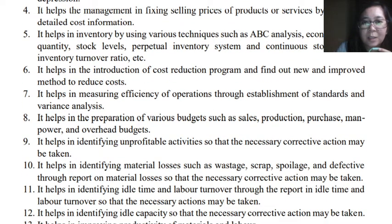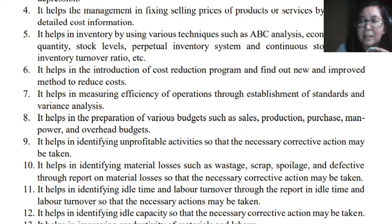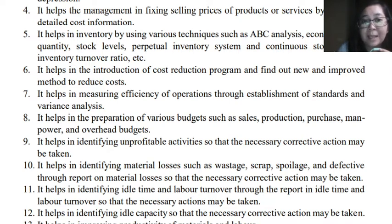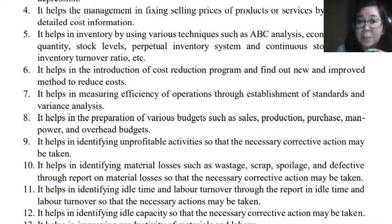Number nine, cost data can also help in identifying unprofitable activities so that necessary corrective action can be taken — this relates to deciding whether to shut down an operation or continue it. Number ten, cost data also helps in identifying material losses. As mentioned in our previous lecture under objectives, this includes wastage, scrap, spoilage, and defective items, which can be disclosed through a report on material losses so that corrective action can be taken.